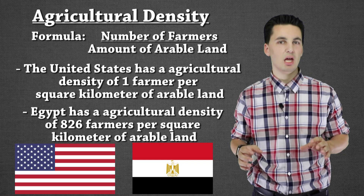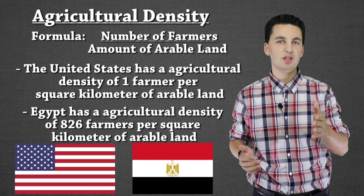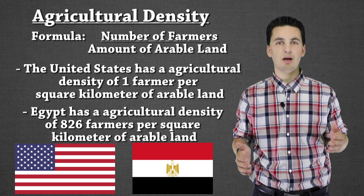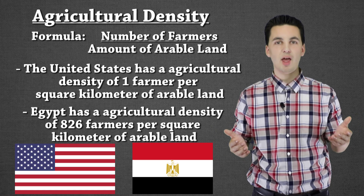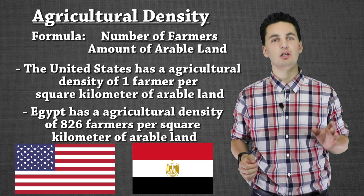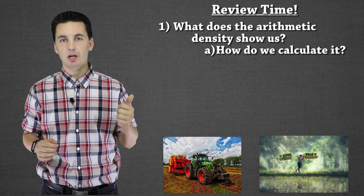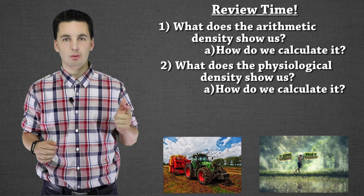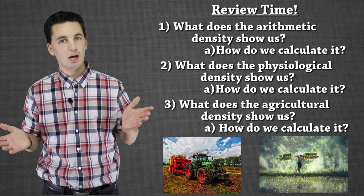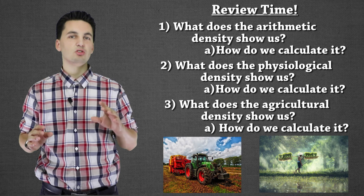Hopefully you're starting to understand these densities. Let's do a quick review and compare them to see some bigger trends — this will help when we look at data and apply it to different situations. I'm going to put a bunch of questions on the board. Try to figure out the answers without looking at your notes or Googling anything. Figure out what arithmetic density is and how we calculate it, then physiological density and how we figure it out, then agricultural density. Also try to put down what each density shows us and what information it provides. Pause the video if you need more time.